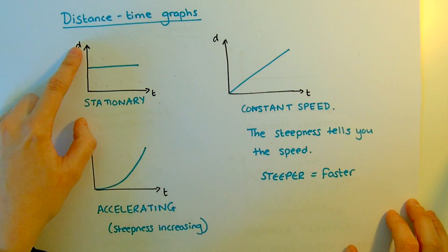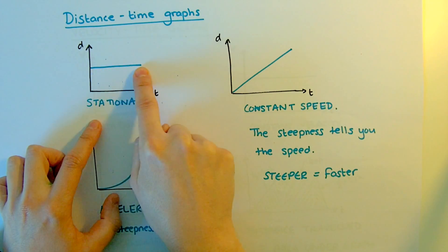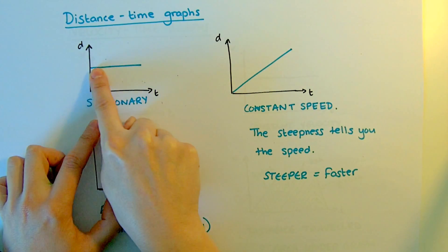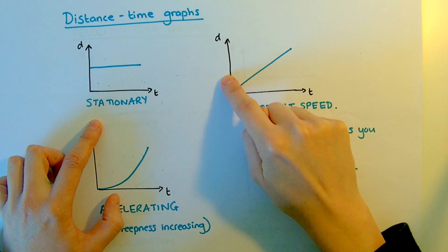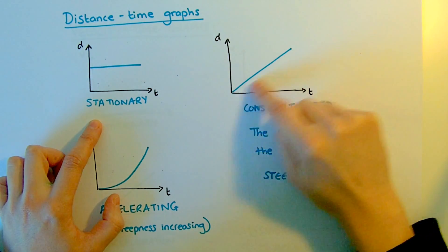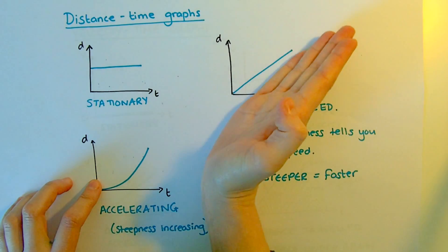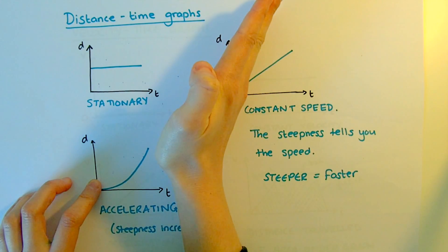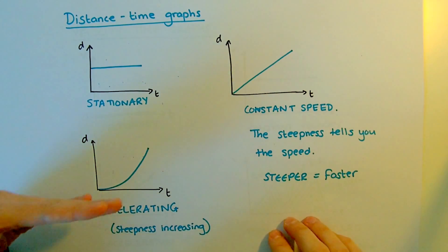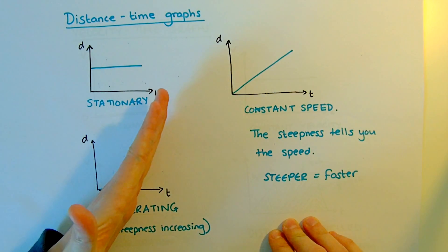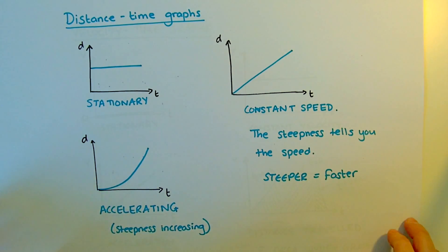Distance-time graphs have distance on the y-axis and time on the x-axis. A straight horizontal line is stationary — the distance is not changing. If the distance is changing, the line will go up. A straight line is constant speed; the steepness of the line tells you the speed — if it were a steeper line, it would be going faster. A curve shows accelerating, because the steepness is increasing, therefore the speed is increasing.